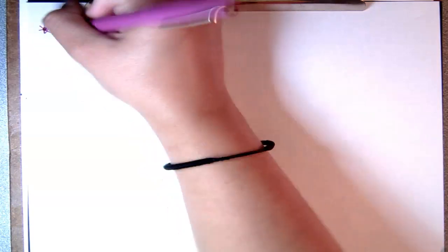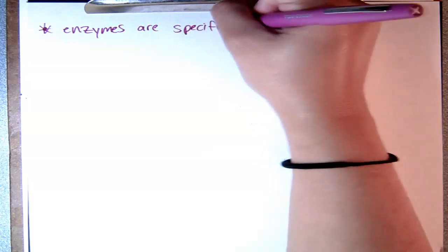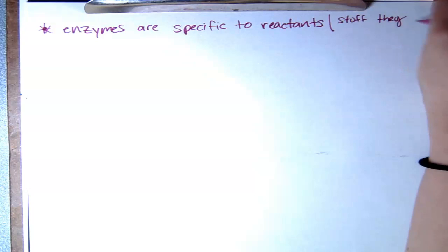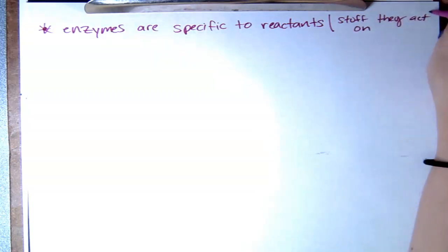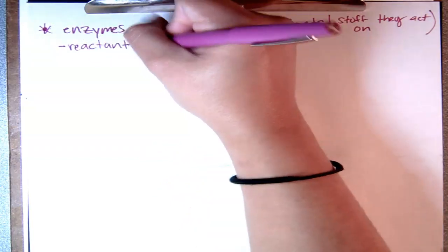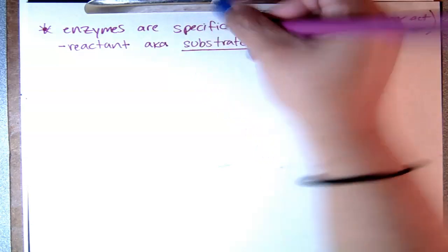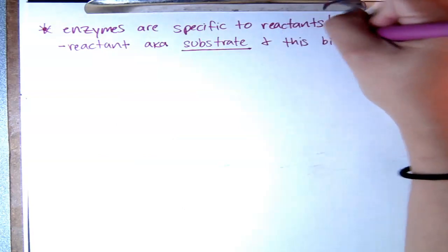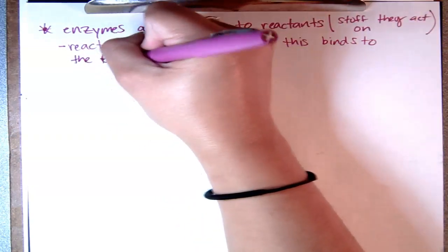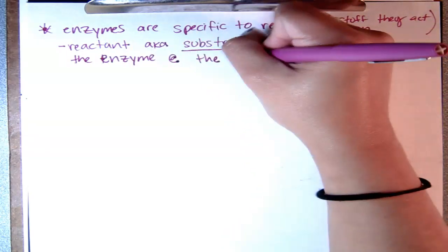One thing you really need to know about enzymes is that they are specific to their reactants — the stuff they act on. The reactant is also known as the substrate, and that's the fancy word used when talking about enzymes. The substrate binds to the enzyme at a specific location, and that location is known as the active site.